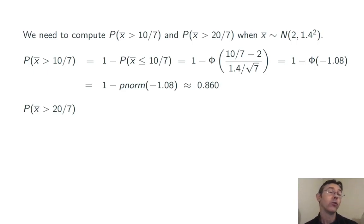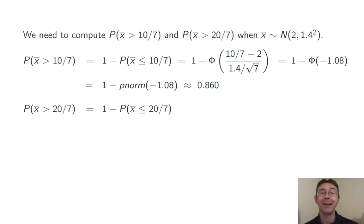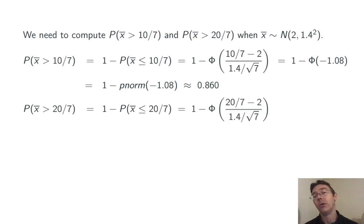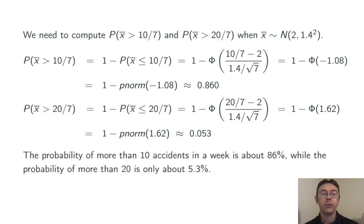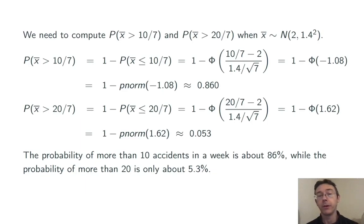The second part of this question asks us to do the same calculation for 20 accidents in a week. The probability that x-bar is greater than 20/7 is 1 minus the probability that x-bar is less than or equal to 20/7, so 1 minus phi of (20/7 minus 2) over (1.4 divided by the square root of 7), which equals 1 minus phi of 1.62. In this case we get 0.053. So the probability of more than 10 accidents in a week is about 86%, while the probability of more than 20 is only about 5.3% — a major difference between those two.